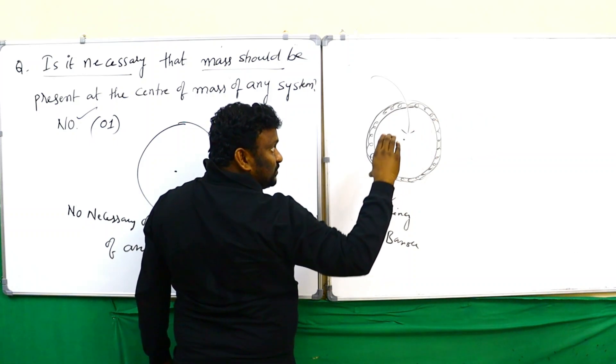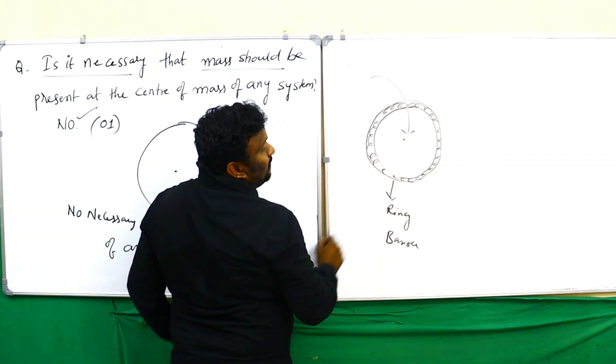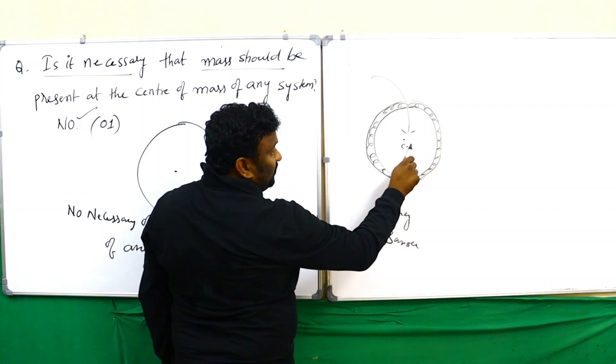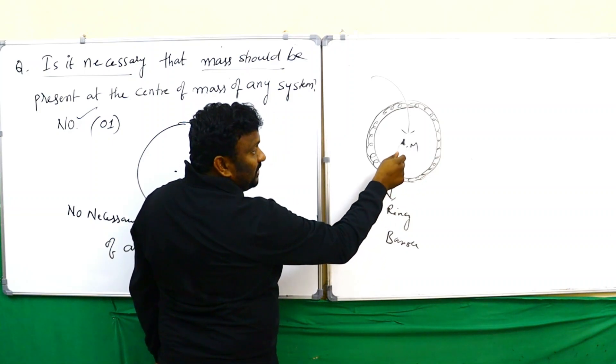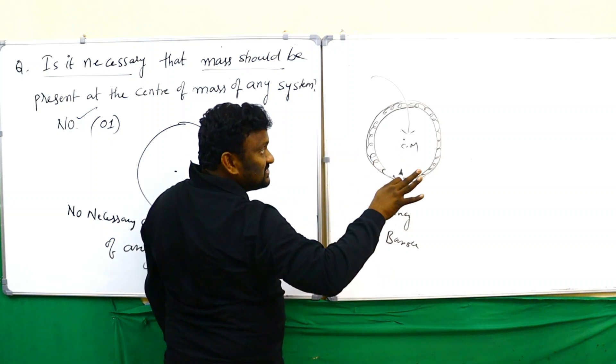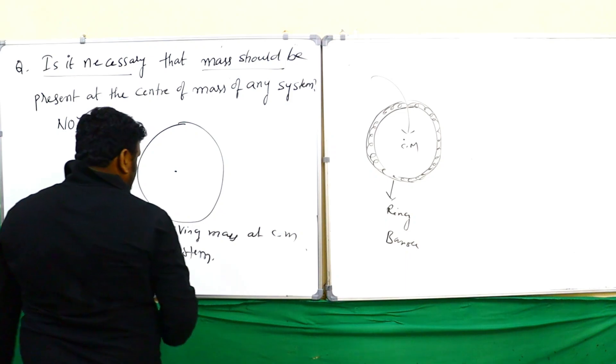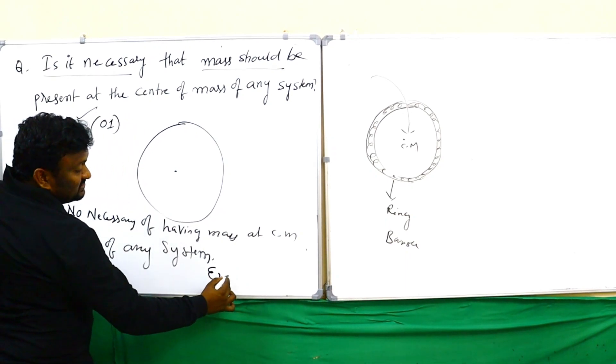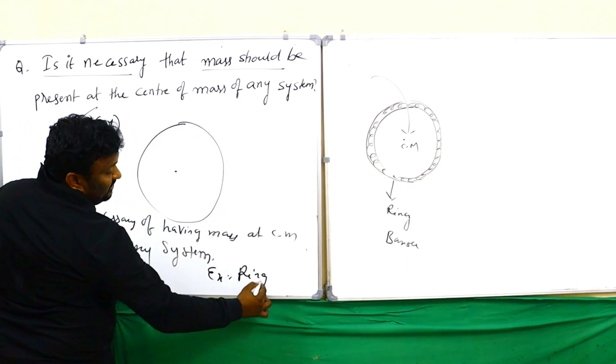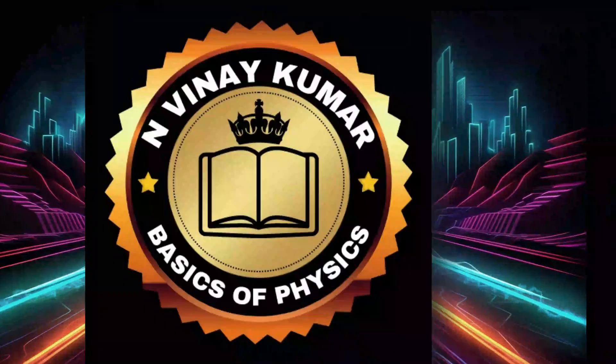So in the center of mass of the ring, there is no mass present there. We can give the example: ring or bangle.